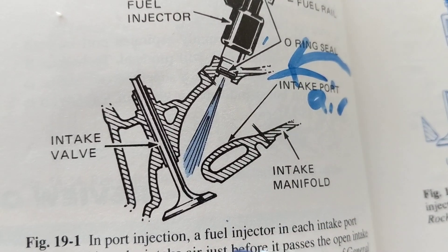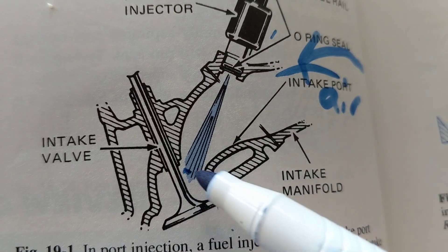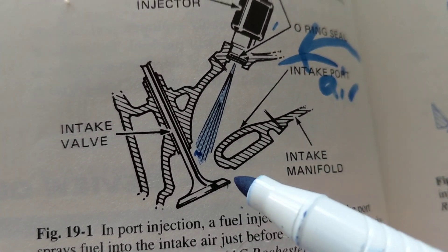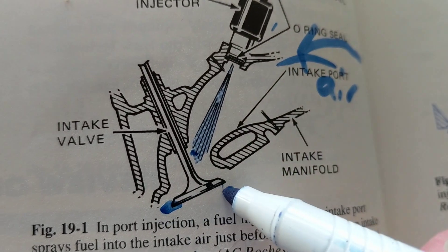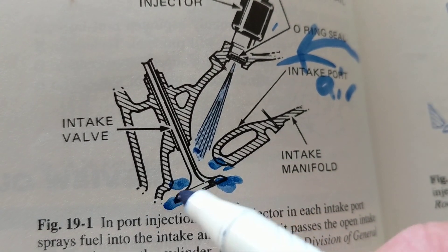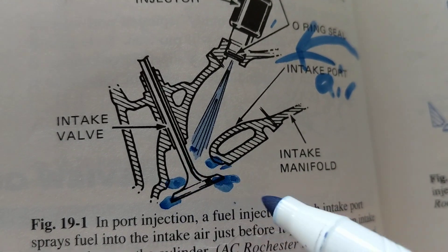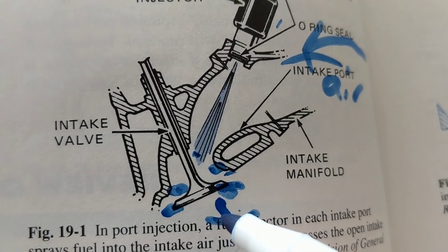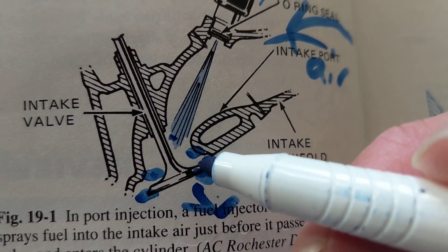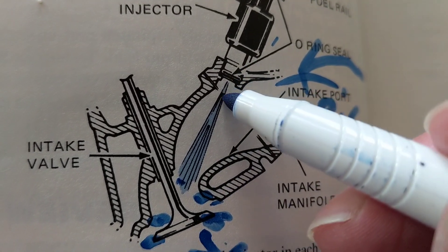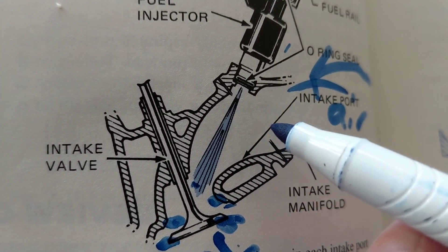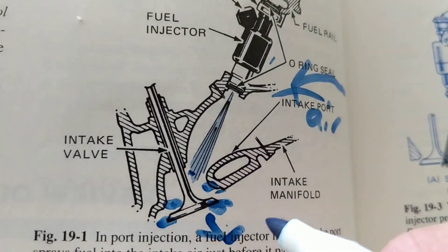During the intake stroke, the piston goes down and this intake valve opens. At the rest position, the valve is in contact and closed — nothing is going in. As soon as the camshaft pushes the valve down via the push rods, there is an opening — enough space to let fuel and air come in together. That's why we call it the air-fuel ratio: air is coming in and fuel is being sprayed by the fuel injector.